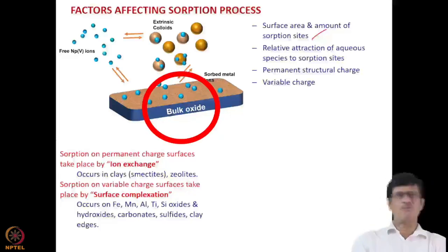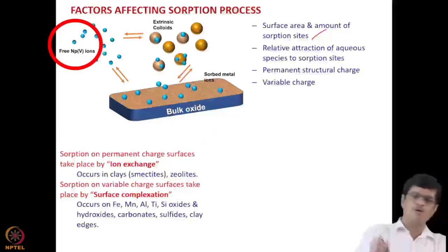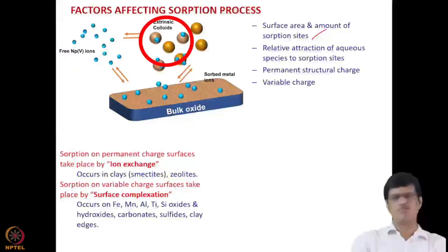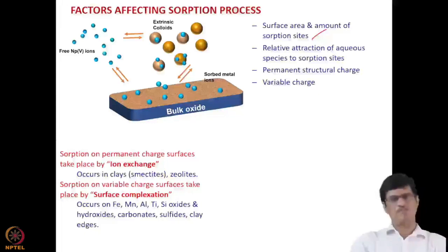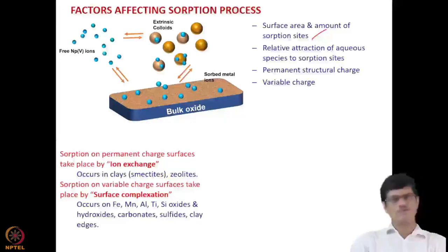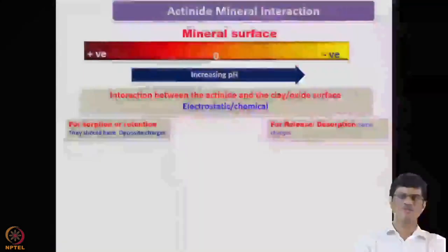The mobile neptunium is either transported as a free ion or as a complex with the mineral colloid. This binding can be by ion exchange, where the actinide ion exchanges with an ion at the mineral surface, or by surface complexation. Surface complexation can take place on the surface of iron, manganese, aluminium, titanium, or silicon oxides, which have hydroxide, carbonates, or sulphides, or at clay edges.